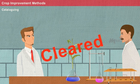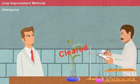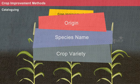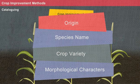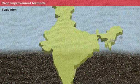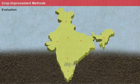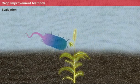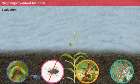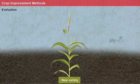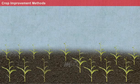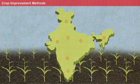In the third step, cataloging, the quarantine-cleared plant material is registered and information such as origin, species name, crop variety, and its morphological characters are recorded. During the evaluation process, the introduced material is evaluated at different agro-substations to assess its resistance against diseases and pests. The evaluated material is then released as a new variety. As the final step, the released variety is multiplied and then distributed to various regions for cultivation.